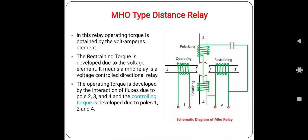The operating torque is developed by the interaction of fluxes due to poles 2, 3, and 4. At the same time, the restraining torque is developed due to the poles 1, 2, and pole number 4.